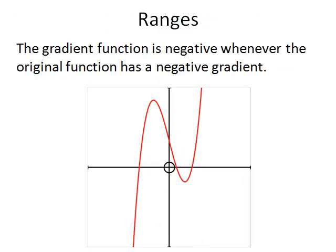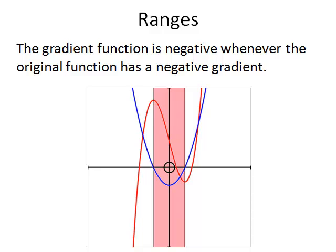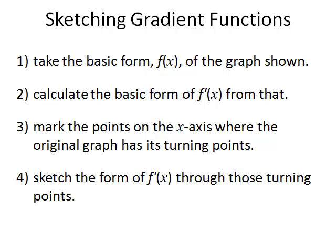Now, we can also interpret these ranges for any of these graphs. In this case, we have a positive cubic. So it has a negative gradient from this point as it turns down and then it starts to get out to this point. The band in pink is where the original cubic graph has a negative gradient, and that is matched by its gradient function being negative in the pink area.